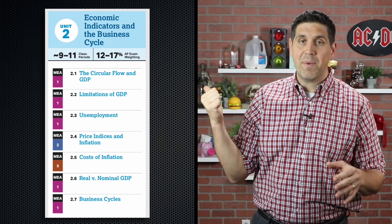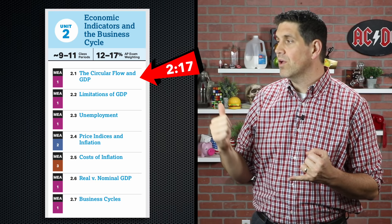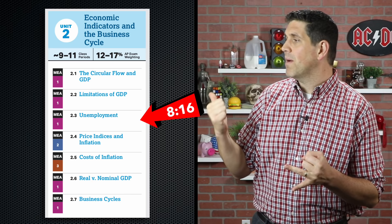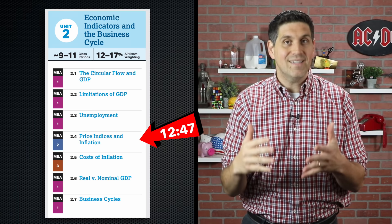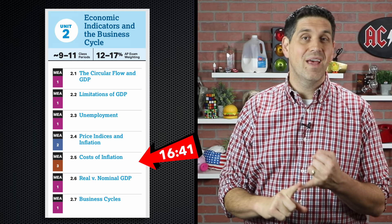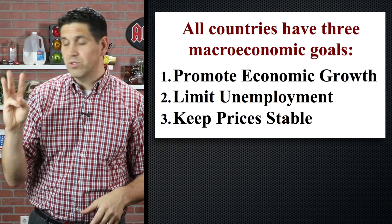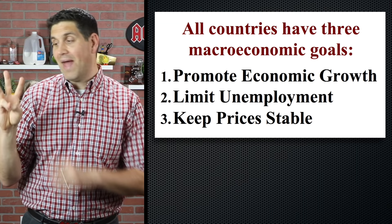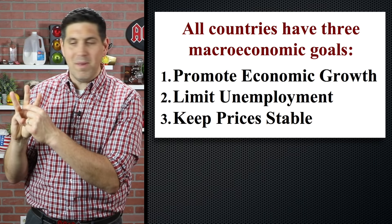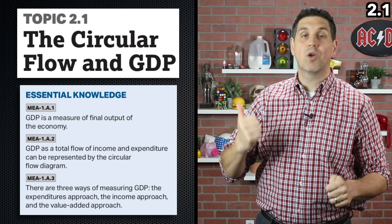The first one I'll talk about is GDP and the circular flow model. Then I'll talk about the limitations of GDP. Then I'll talk about unemployment. Then I'll jump into inflation, how to measure it with price indices, the inflation rate, and the CPI. Next, I'll talk about the cost of inflation — who's helped and who's hurt by unanticipated inflation. Then I'll talk about real and nominal GDP and finish it off with the business cycle. The key to this unit is that every economy has three goals: to grow over time, to reduce unemployment, and to keep prices stable.